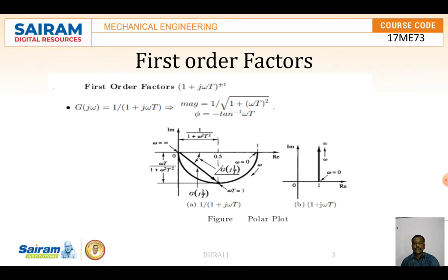Then comes to the first order and second order systems. The first order factors (1 + jωT)^±1. G(jω) = 1/(1 + jωT) = magnitude 1/√(1 + ω²T²), φ = -tan⁻¹(ωT). Why? Because here in the b term, it is ωT and a is 1. So tan⁻¹(b/a) = ωT/1. Here we take the negative sign because it comes in the denominator. Denominator we take negative sign and numerator we take positive sign.